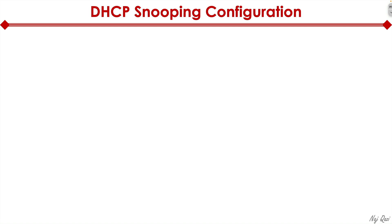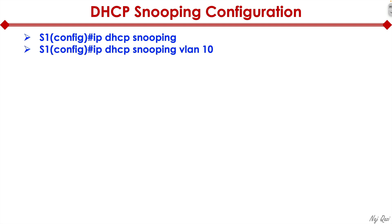For the DHCP snooping configuration, we type in 'ip dhcp snooping' at a global level to enable it. We can also specify 'ip dhcp snooping vlan', which ties snooping to a particular VLAN, meaning we will be snooping traffic on that specific VLAN for DHCP requests.